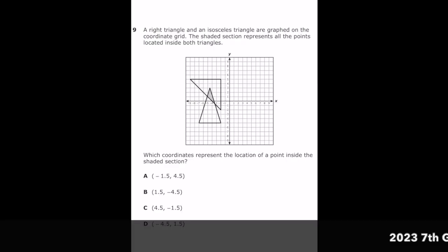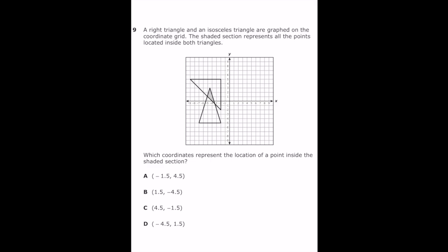This is number 9 from the 2022 6th grade math STAR test. A right triangle and an isosceles triangle are graphed on the coordinate grid. The shaded section represents all the points located inside both triangles. Which coordinates represent the location of a point inside the shaded section? We're going to go through each answer choice and see which of these points is inside that shaded section that forms a triangle.